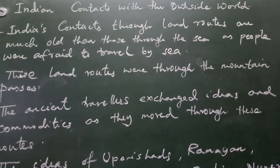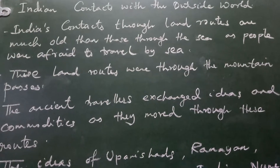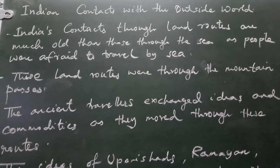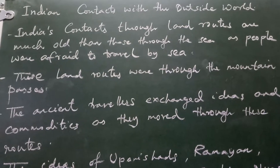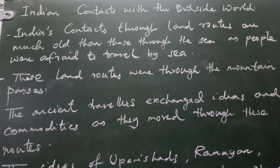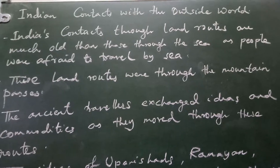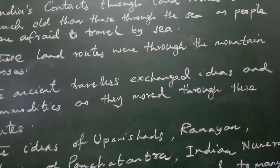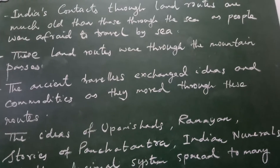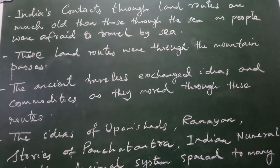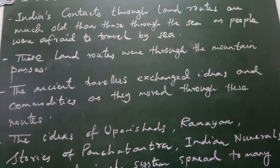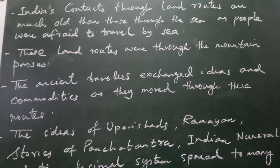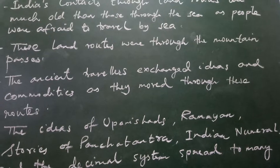These land routes were through mountain passes. A mountain pass is a gap between two mountains, and from those gaps people used to move from one part to another. Ancient travelers used to exchange ideas and commodities as they moved throughout these mountain pass routes.